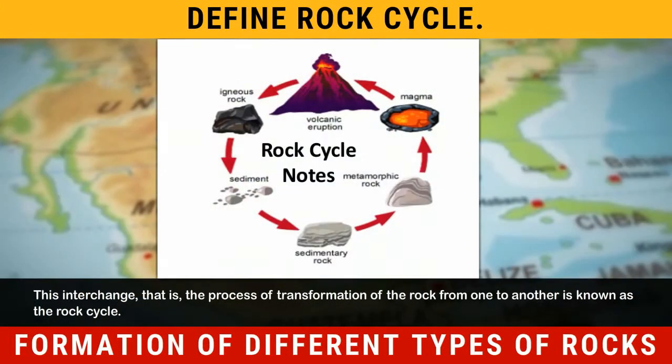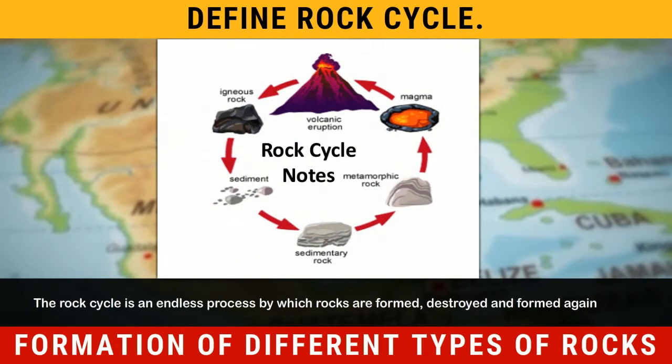This interchange — that is, the process of transformation of the rock from one to another — is known as the rock cycle. The rock cycle is an endless process by which rocks are formed, destroyed, and formed again.